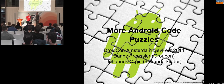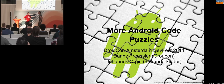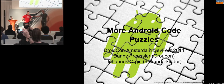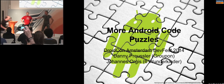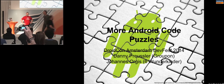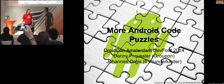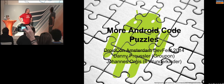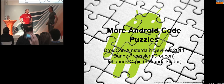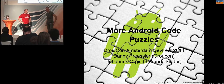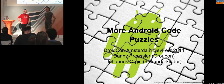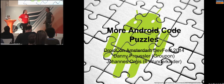Maybe a short introduction. This is Johannes, working for a company with a similar name, 600kinder. I'm Danny, working for Groupon.